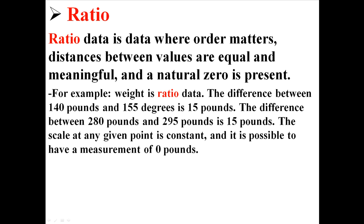For example, weight is ratio data. The distance between 140 and 155 is 15 pounds. The distance between 280 and 295 is 15 pounds. The scale at any given point is constant, and it's also possible to have a measurement of zero pounds. There is a natural zero.